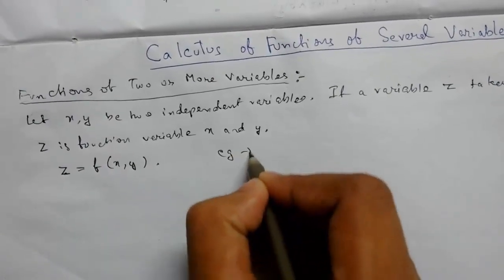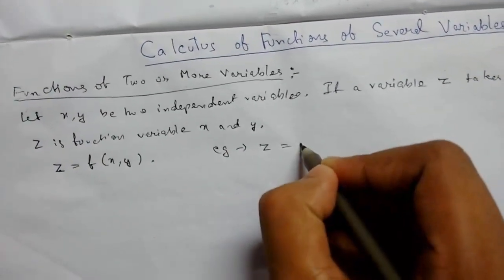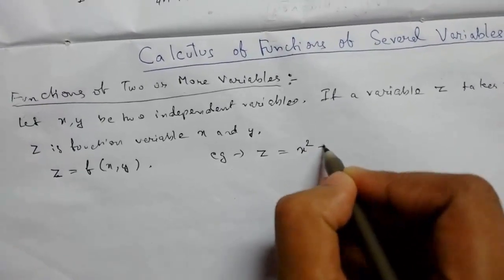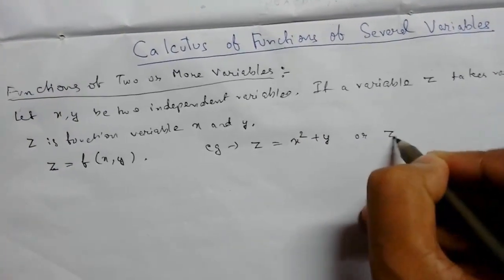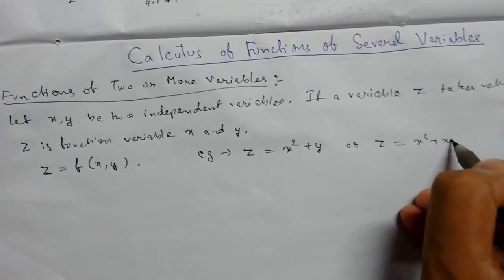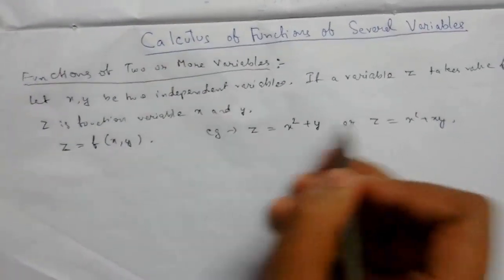For example, suppose you have a function like z equals x square plus y, or z equals x square plus xy. We can have anything which has two variables.